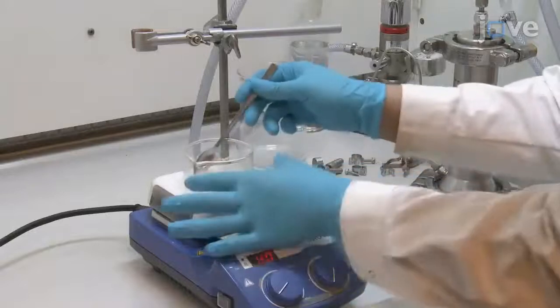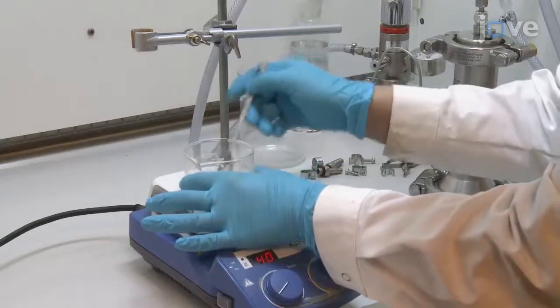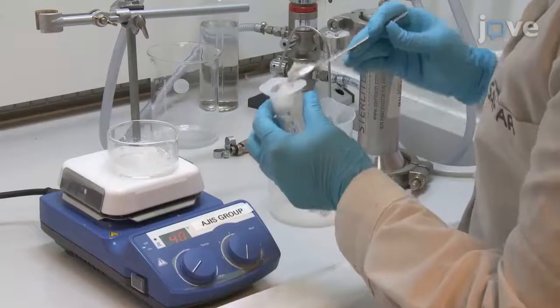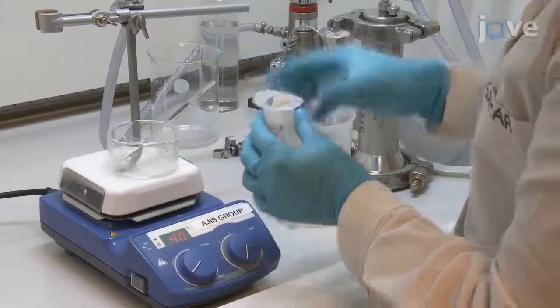Heat the mixture to 40 degrees Celsius and mix with a spatula until a smooth paste is obtained. Transfer the mixture into a 60 mL syringe.